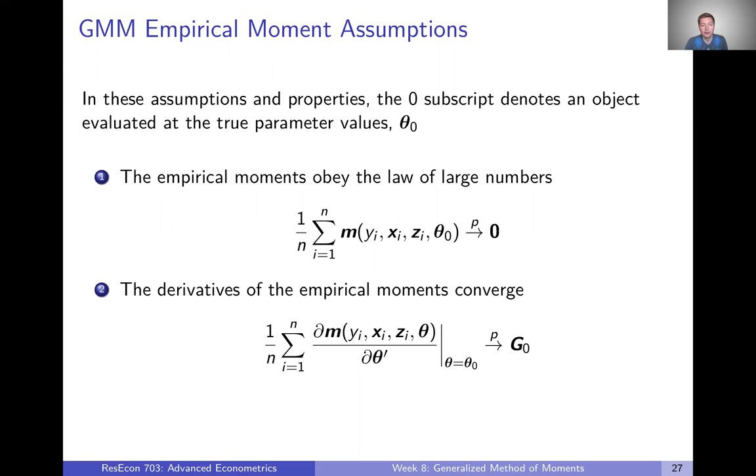So the first thing is that the empirical moments obey the law of large numbers. So as we get more and more data, they will converge in probability to zero. We want them to equal zero, so it's good that they need to converge to zero. The derivatives of the empirical moments also must converge, just converge to some kind of matrix here. It doesn't necessarily have to be zero or anything like that, like in the previous assumption.